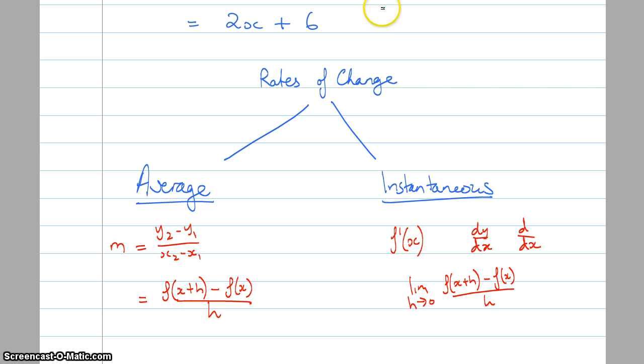And the way that we can denote that we're doing the instantaneous rate of change is f dash x or dy dx or just d dx if there's no y involved. Or limit of h approaches 0, f of x plus h minus f of x over h. Any of these three or four things here will actually denote that we're doing the instantaneous rate of change. Otherwise, we'll be doing the average rate of change. Most commonly, we'll be doing instantaneous rate of change in this course.